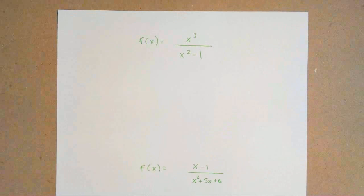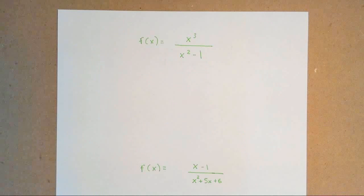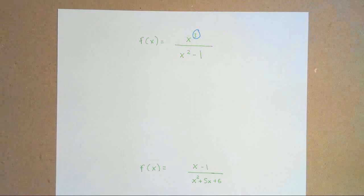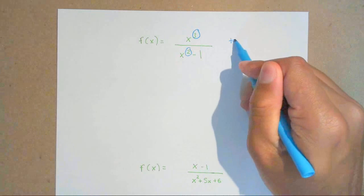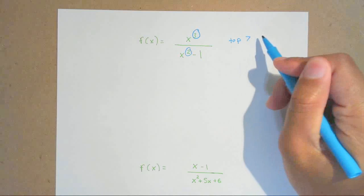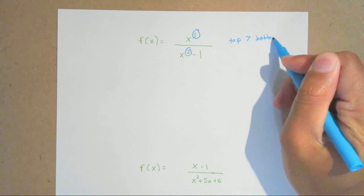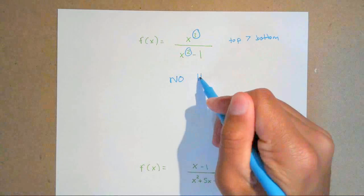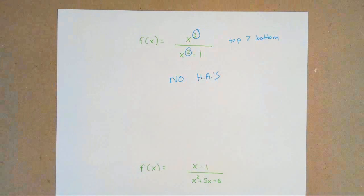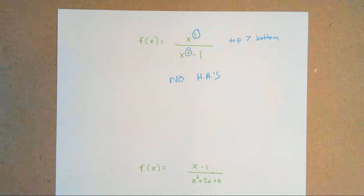Let's look at a couple of examples. Our goal is to find the HAs. The first thing I'll do is ask: what is the highest degree on the top? The highest degree on the top is three, and the highest degree on the bottom is two. Because my top is greater than my bottom, there are no HAs — no horizontal asymptotes. Any time your degree on the top is greater than the degree on the bottom, there are no horizontal asymptotes.